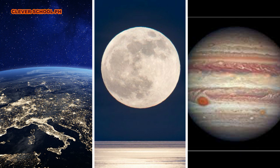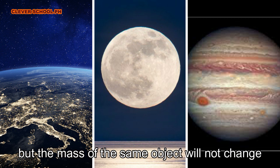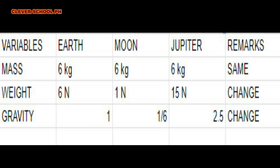Therefore, the weight of an object will be different on Earth, the Moon, and Jupiter, but the mass of the same object will not change. An object that has a mass of 6 kg on Earth will still have 6 kg mass whether it is on the Moon or on planet Jupiter. The weight of the same object becomes less when transferred from Earth to the Moon, but on Jupiter the weight is greater, because the Moon's gravity is lesser than Jupiter's gravity.